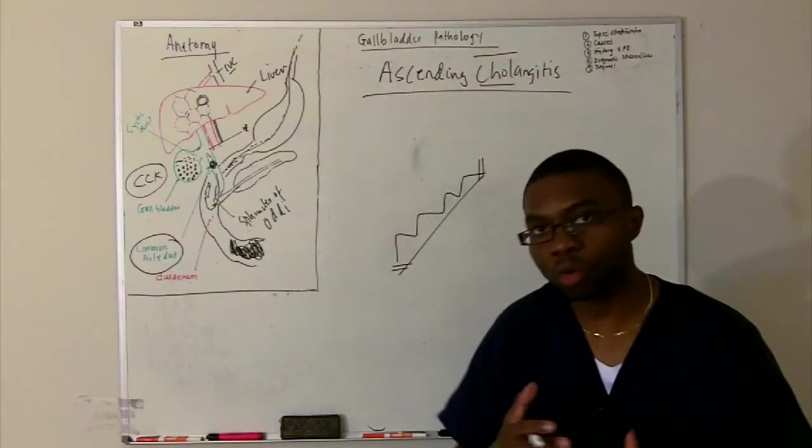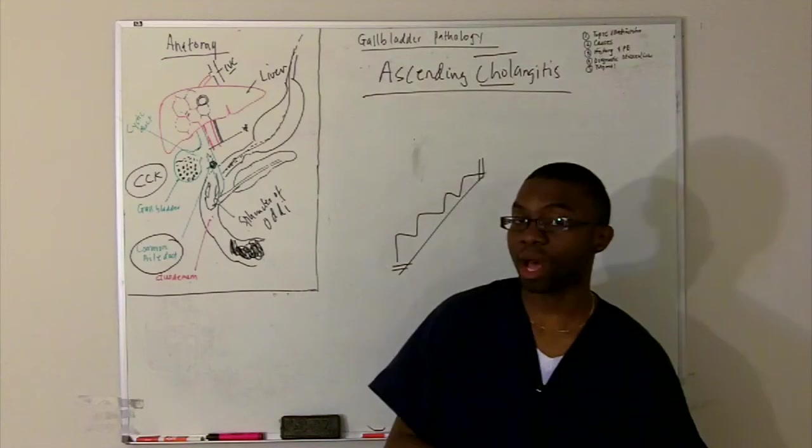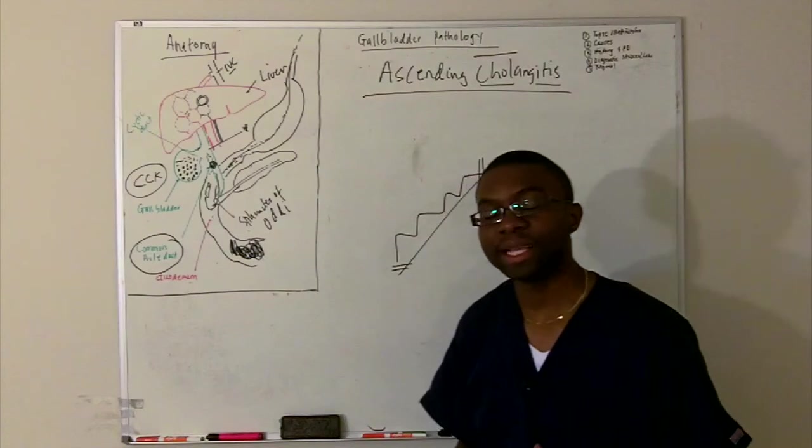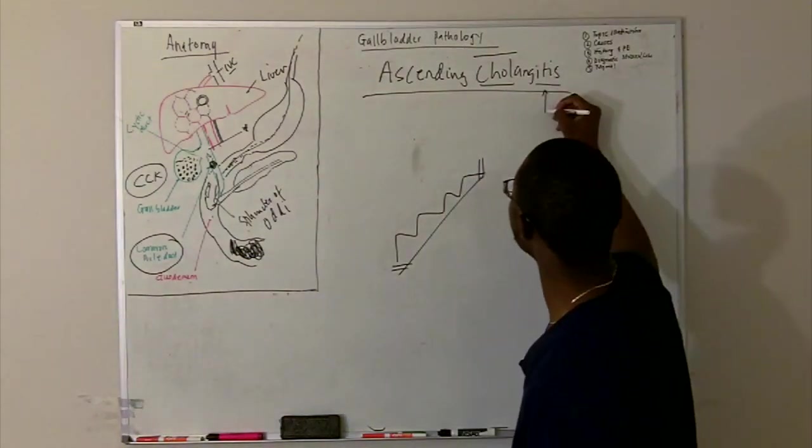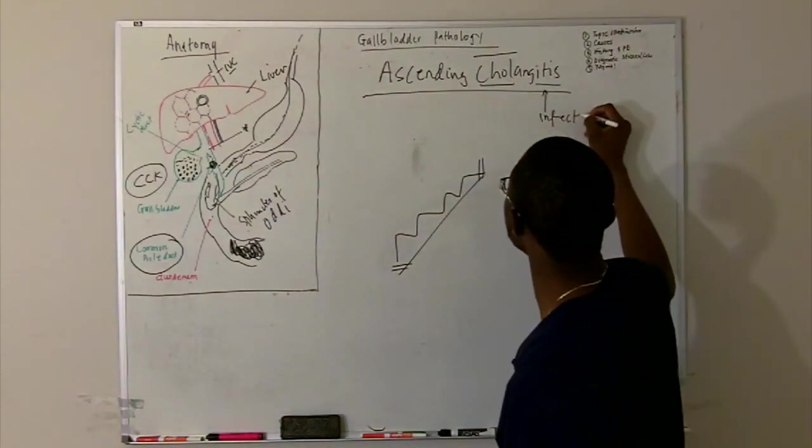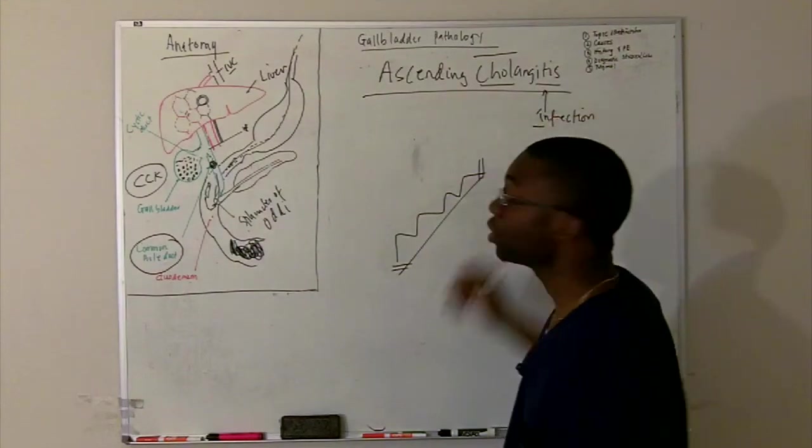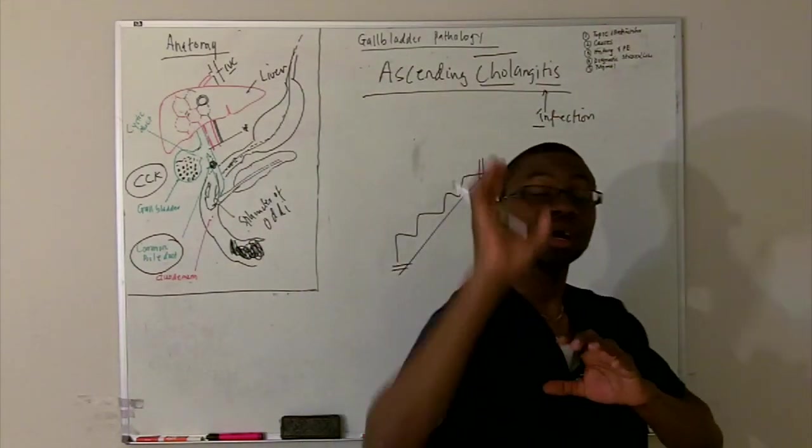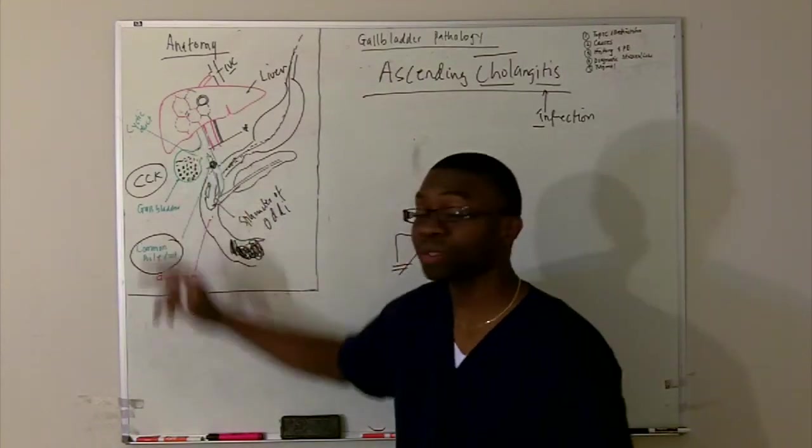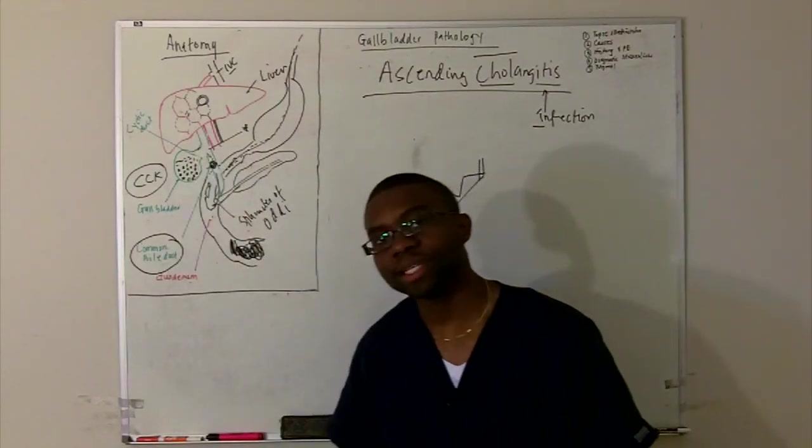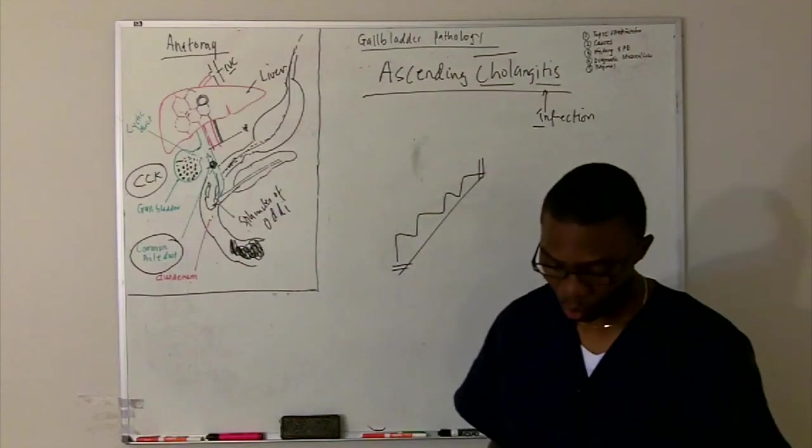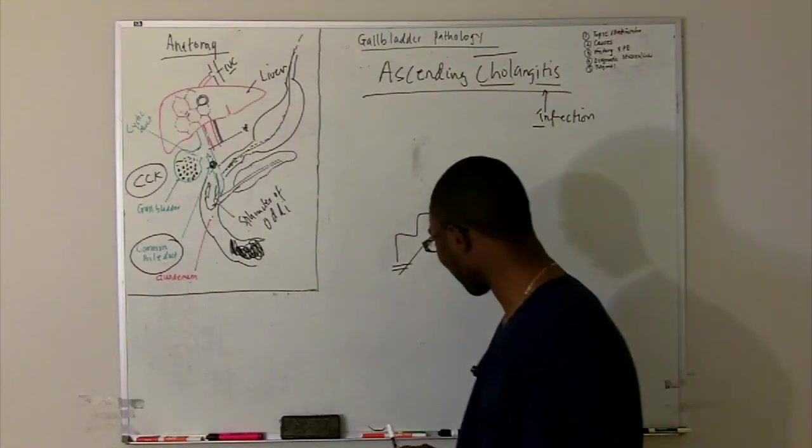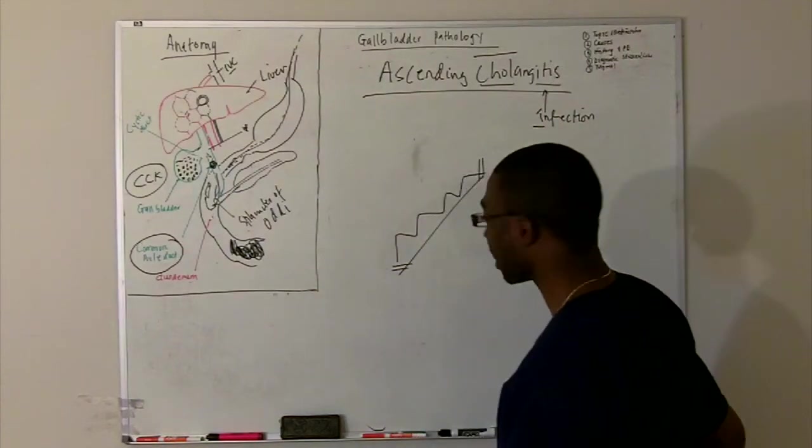And inside there is a lot of bacteria. So, the definition of ascending cholangitis is what? Something is going up, ascending, affecting the biliary tree, cholangio, inflammation, itis. In this case, what's causing the inflammation is an infection. So, an infectious process creeping up into this green line, which is the common bile duct. It's called ascending cholangitis. What do you think is causing it? Bacterial overgrowth.